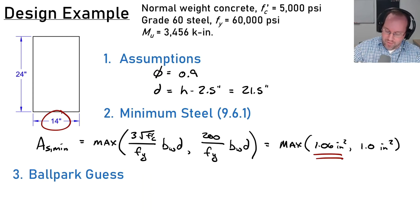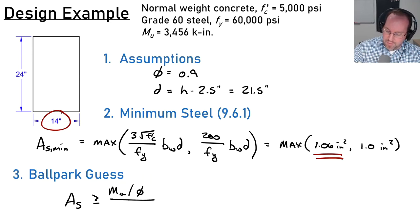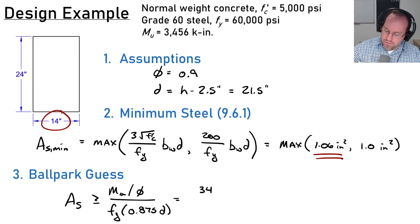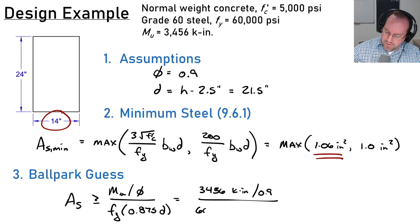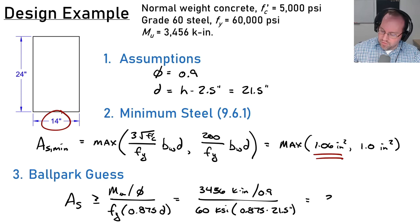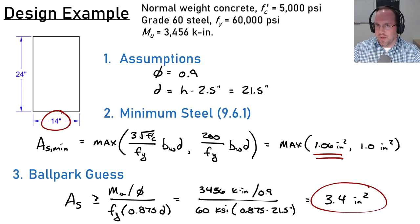Beginning with the ballpark guess: As ≥ Mu / (φ · fy · 0.875d). Plugging in my numbers — demand is 3,456 kip-in, divided by φ = 0.9, divided by fy = 60 ksi, multiplied by 0.875 × d = 21.5 inches — this gives As ≥ 3.4 in². That's my ballpark number and a decent amount of steel. I could proceed with this, but I always like checking both methods.